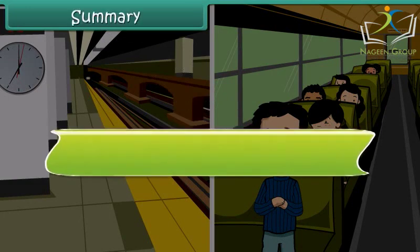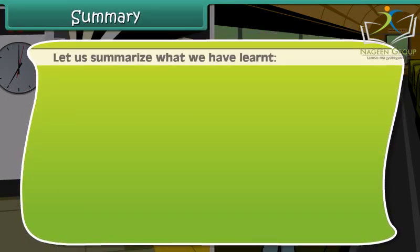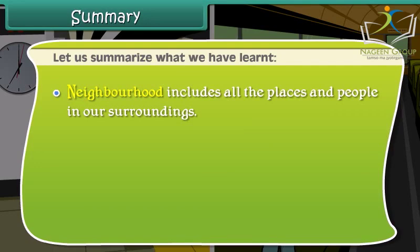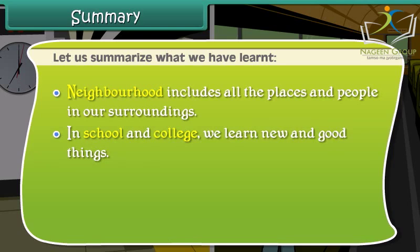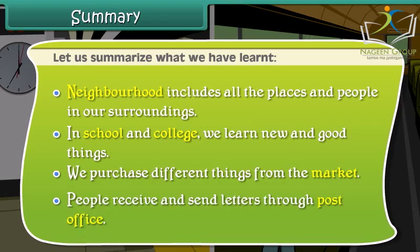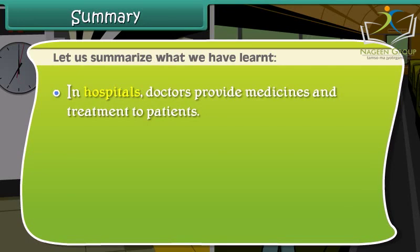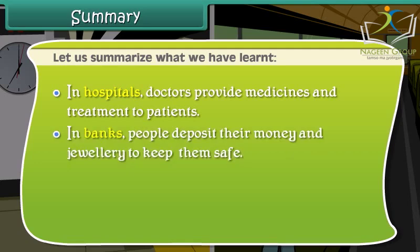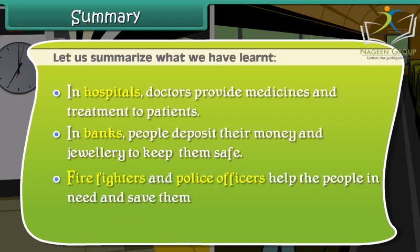Summary. Let's summarize what we have learned so far. Neighborhood includes all the places and people in our surroundings. In school and colleges, we learn new and good things. We purchase different things from the market. People receive and send letters through the post office. In hospitals, doctors provide medicines and treatment to patients. In banks, people deposit their money and jewellery to keep them safe. Firefighters and police officers help the people in need and save them. Buses and railways join distant places.